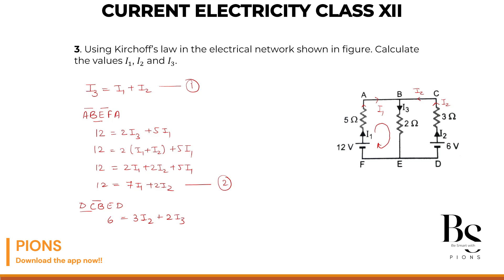What is our I3? From equation 1, I3 is nothing but I1 plus I2. So this will give you 3I2 and 2I2, 5I2 plus 2I1. That is our 6. This is our equation number 3.